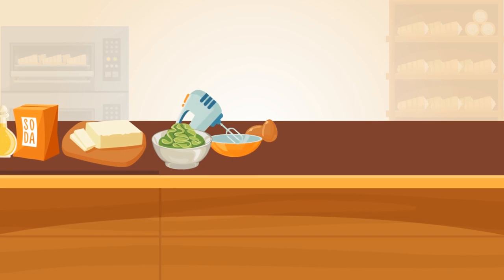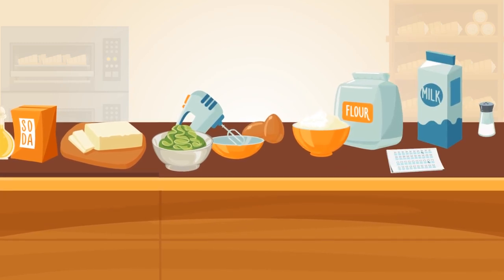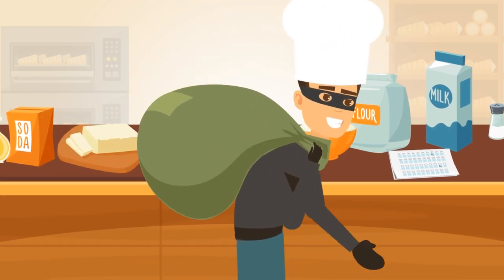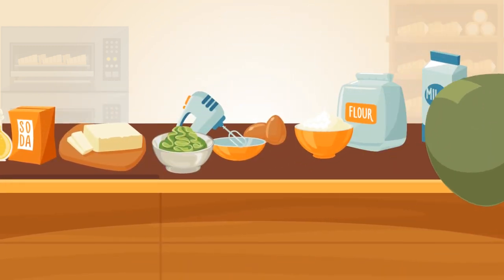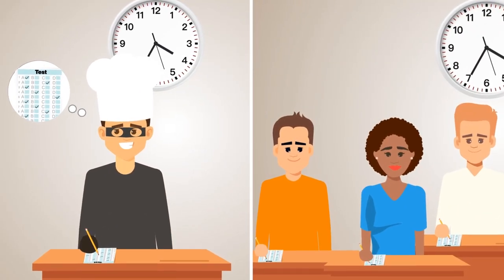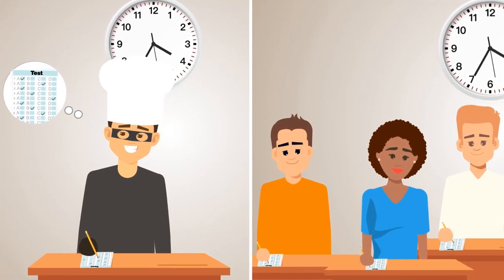For example, how do we protect the items from being shared to future test takers? If the future test takers have seen the items before the test, the scores may not be an accurate representation of their baking ability. That would not be fair to the other test takers who did not see the items before taking the test.